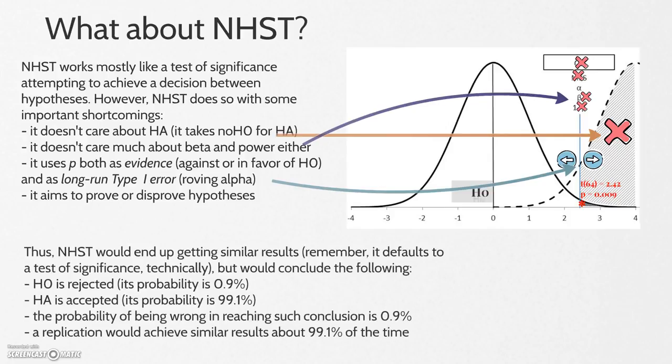Therefore, NHST would end up getting similar results (remember, it defaults to a test of significance technically) but it would conclude the following: The null hypothesis is rejected with a probability of about 1%. The alternative hypothesis is accepted with a probability of 99%. The probability of being wrong in reaching such conclusion is also about 1%. And a replication will achieve similar results about 99% of the time.